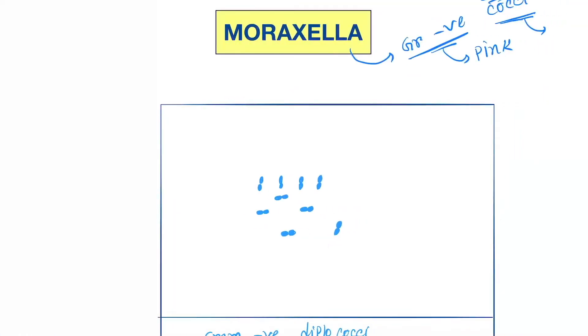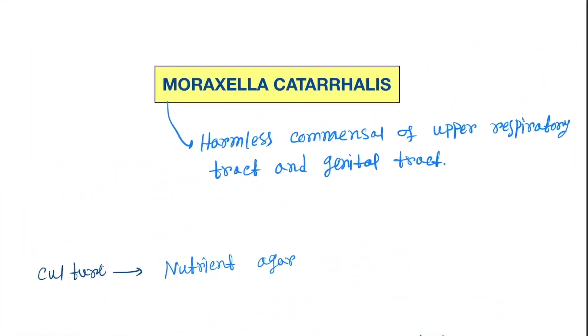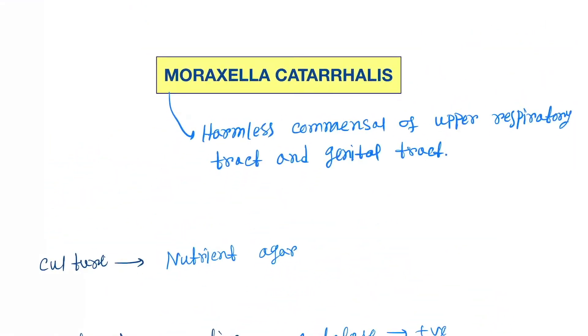There are two species of Moraxella: first is Moraxella catarrhalis, and next is Moraxella lacunata. Let's see them one by one. First, Moraxella catarrhalis - these are harmless commensals of the upper respiratory tract and genital tract.